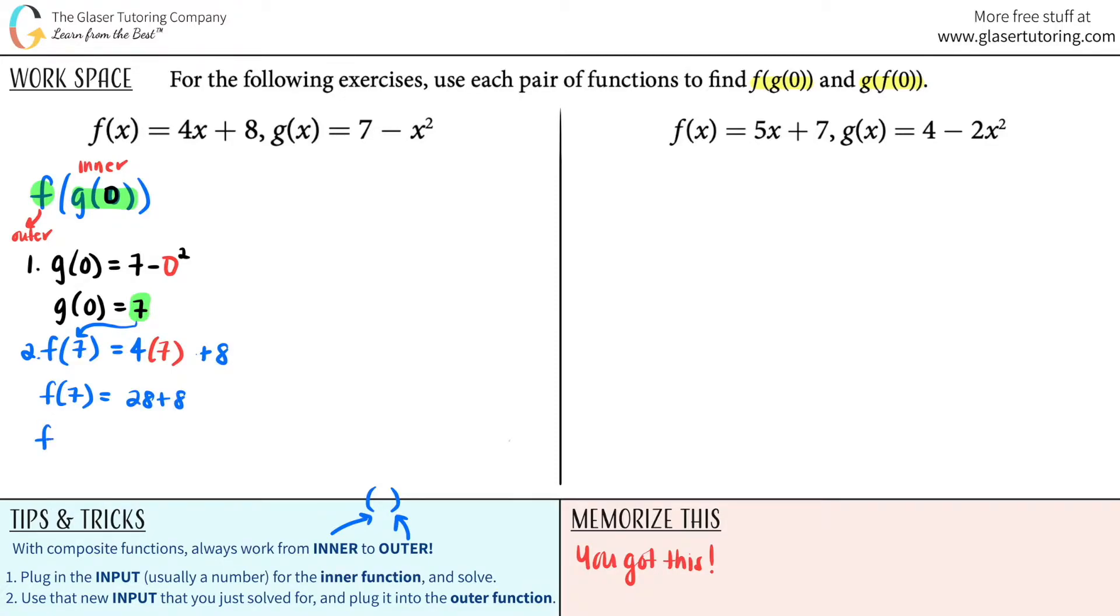So you can either say that this is f of 7, or it's the overall total. So it would be f of g of 0. And that would be equal to 28 plus 8, so 36. And that is your final answer for the first one. Now we're going to go a little faster, because we kind of have the idea here. Let's switch them up. So we need to find out what g of f of 0 is.